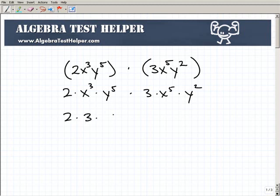Thinking about this problem in terms of these factors, I'm going to write numbers next to numbers—so that would be 2 times 3, then get my x's together, x³ times x⁵, and then get my y's next to one another.